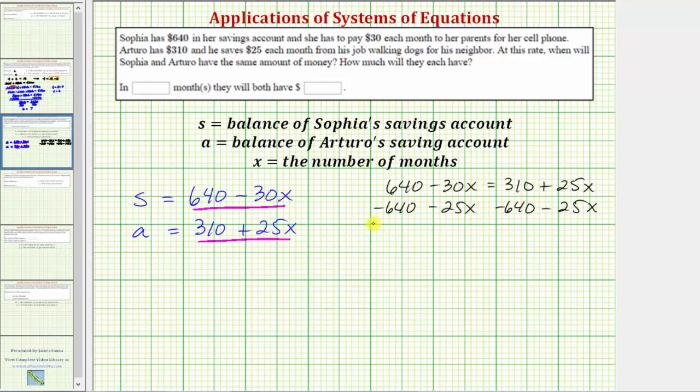So simplifying, this would be zero. Negative 30x minus 25x is negative 55x. On the right side we have 310 minus 640 which is negative 330. And 25x minus 25x is zero.